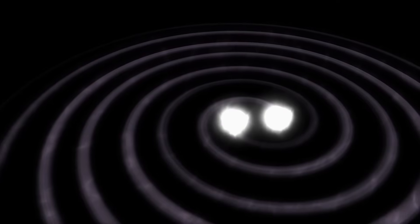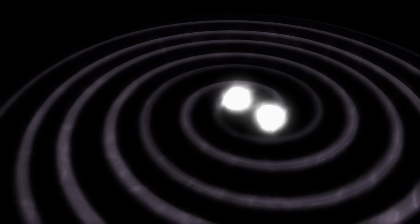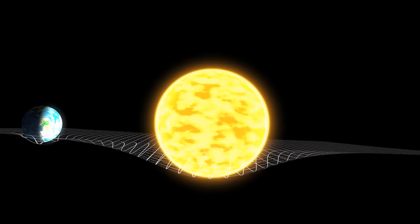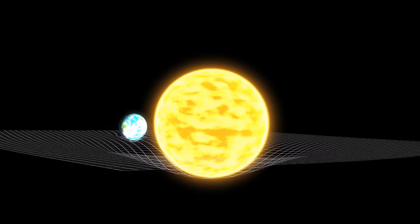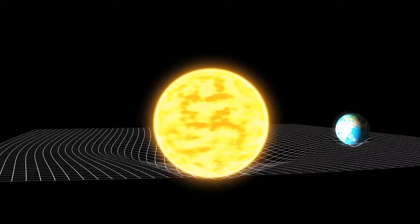The concept of wormholes arises from the mind-bending nature of Einstein's general relativity, which describes the universe as a vast four-dimensional fabric called spacetime. Massive objects like stars and black holes stretch and curve this fabric, creating gravitational fields that dictate the movement of everything around them.